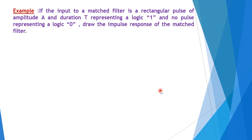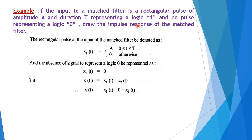Now we look at an example: the input to a match filter is a rectangular pulse of amplitude A and duration T representing a logic 1, and no pulse representing a logic 0. We are asked to draw the impulse response of the match filter. A rectangular pulse at the input x₁(T) equals A for 0 ≤ t ≤ T and 0 otherwise. The absence of signal for logic 0 is x₂(T) = 0.